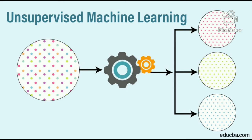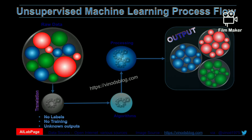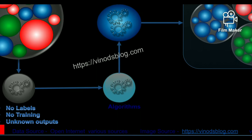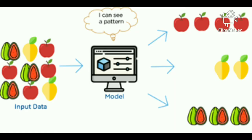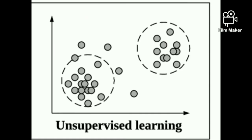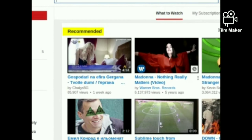Unsupervised machine learning holds the advantage of being able to work with unlabeled data. We do not have a dependent variable; we only have independent variables. We use clustering to find groups of data. For example, given data of apples, mangoes, and nuts, we want our machine to identify groups — making different clusters of the unlabeled data.